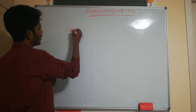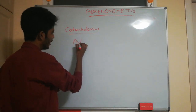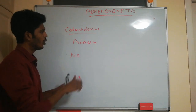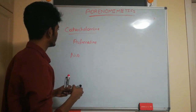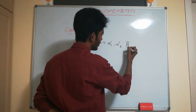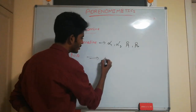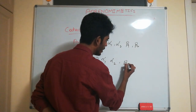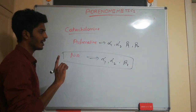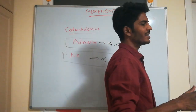Adrenaline stimulates alpha 1, alpha 2, beta 1, and beta 2 receptors. Noradrenaline stimulates alpha 1, alpha 2, and beta 1, but has no action on beta 2 receptors. So the key difference is that adrenaline acts on beta 2 while noradrenaline does not.